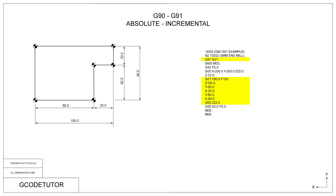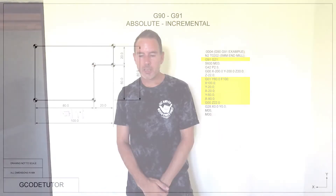On completion of the course you will feel confident you can program any shape on a CNC machine using G-Code. I introduce you to new G-Codes and M-Codes and then we put it into a program. I go through the program line by line so you can see what goes on in a real world environment.